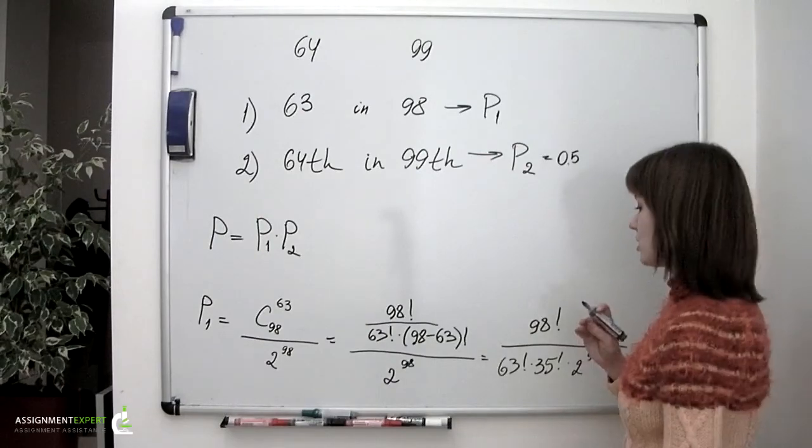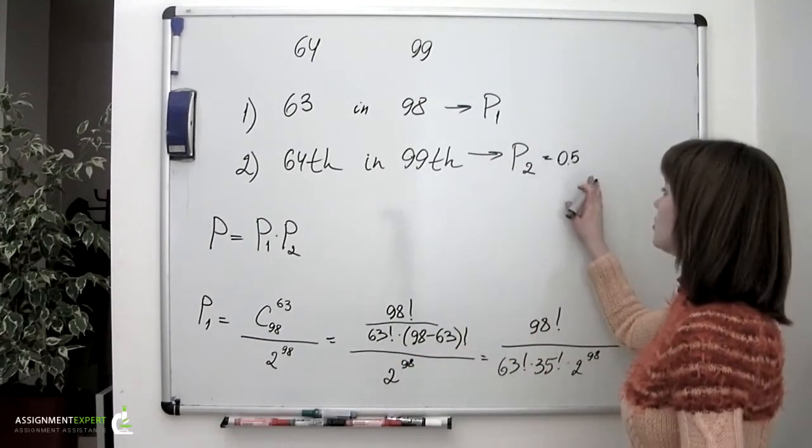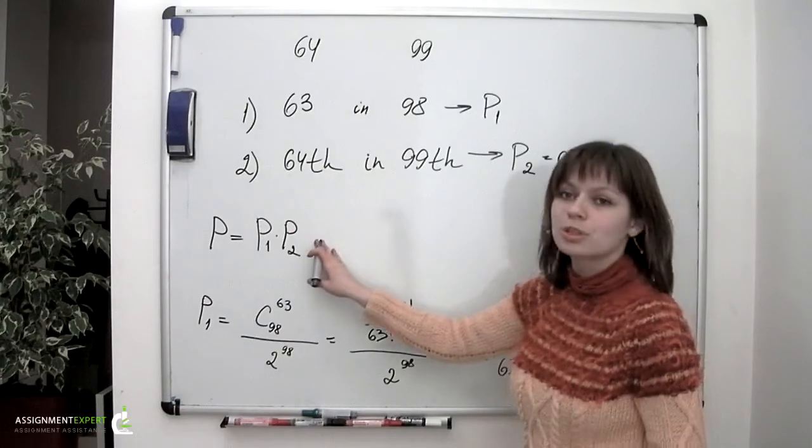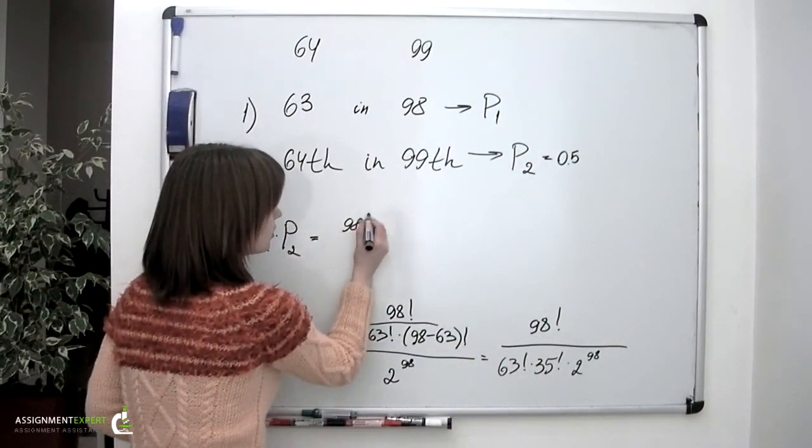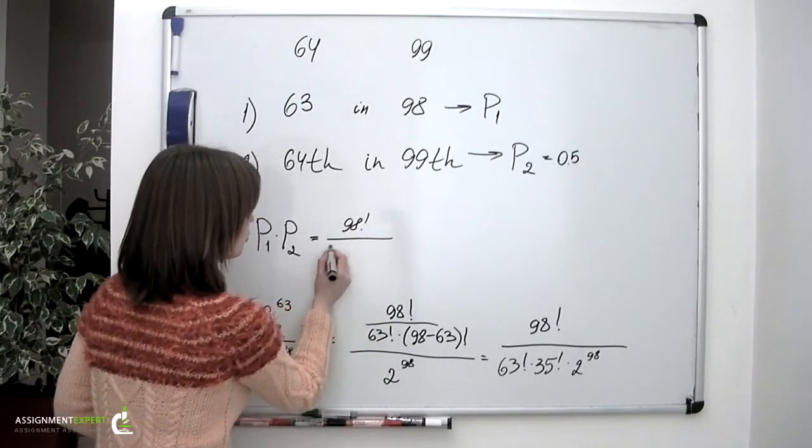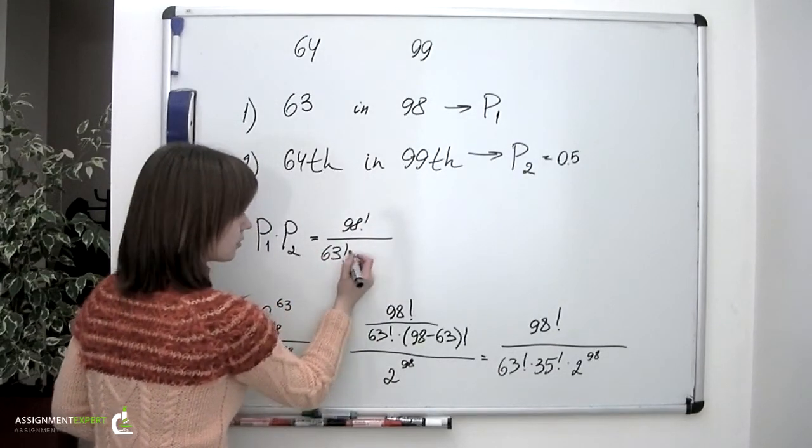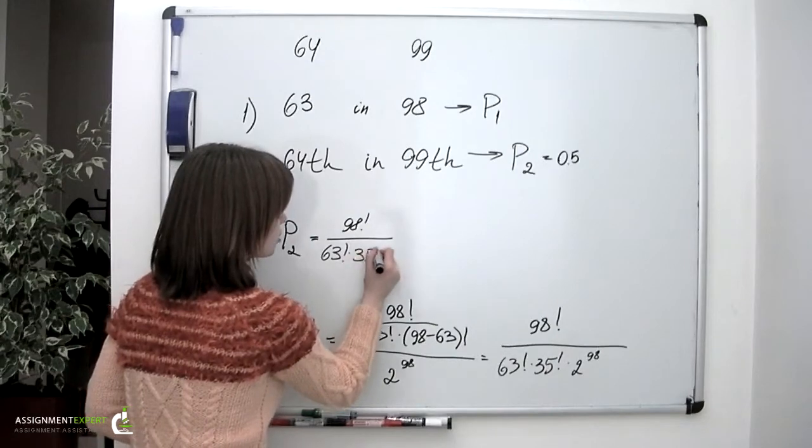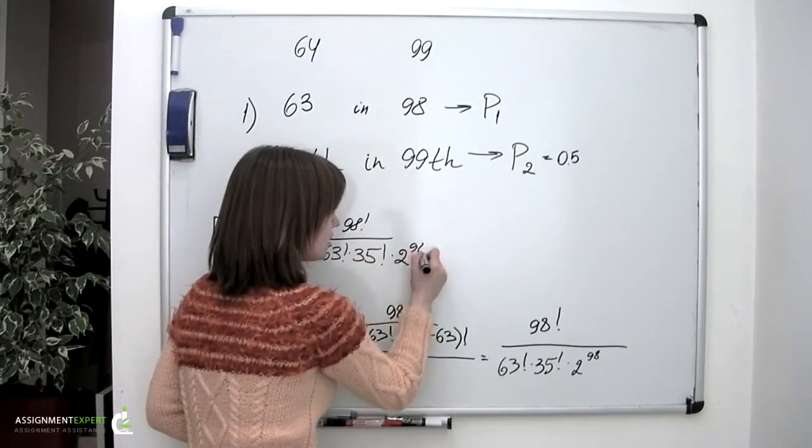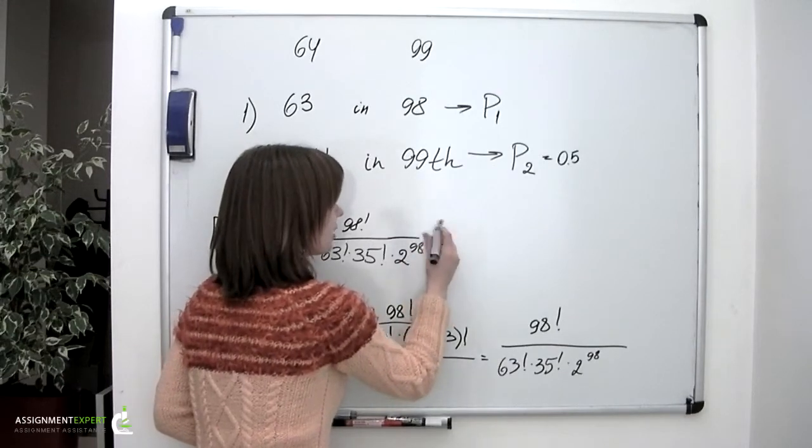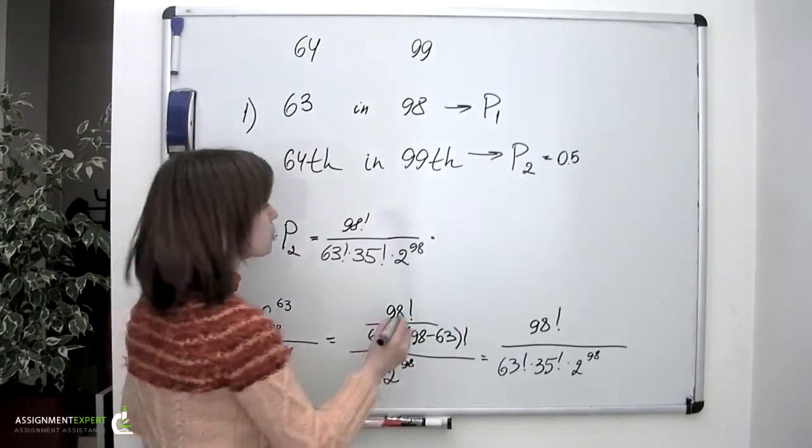Now let's substitute these P1 and P2 probabilities into the formula for P. So we'll go 98 factorial over 63 factorial times 35 factorial times 2 to the 98th multiplied by P2 which is one half.